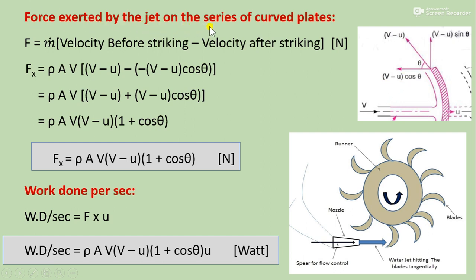The force exerted by the jet on the series of curved plates can be obtained using the impulse-momentum principle: F equals m-dot times velocity difference. Force in the x-direction: Fx equals rho·A·V times [(V minus U) minus (minus V minus U cos theta)]. Since minus minus gives plus, and V minus U is common, we get Fx equals rho·A·V·(V minus U)·(1 plus cos theta), in Newtons.